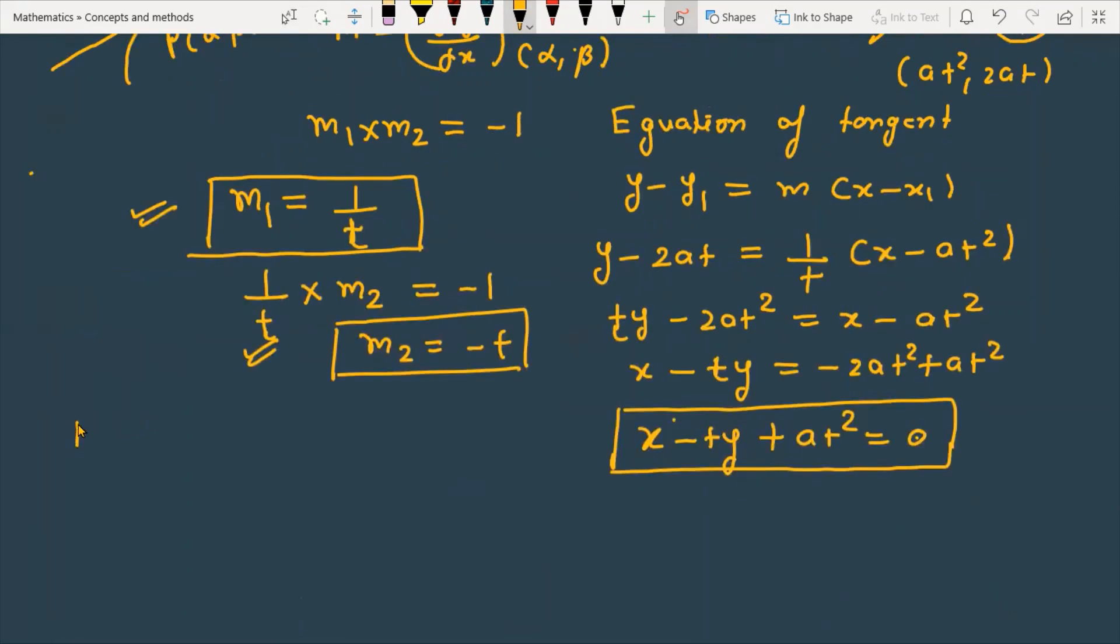Now for the equation of the normal, using the same slope-point form of a line which is y - y₁ = m(x - x₁). This is y - 2at equals -t times (x - at²).